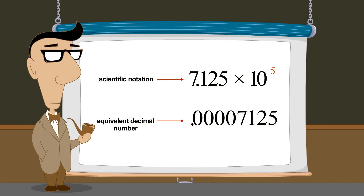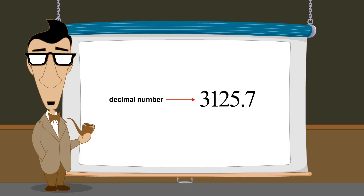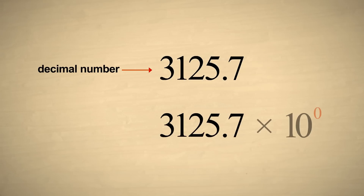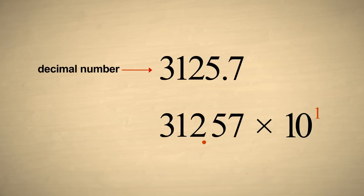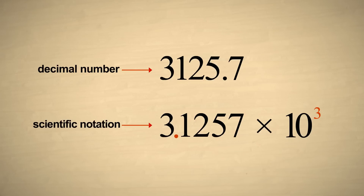Now that we have seen how to convert a number written in scientific notation to a standard decimal number, let's convert a decimal number into scientific notation. We'll start by adding a multiplier of ten to the zero power. This is the same as multiplying by one, so the value of the number is unchanged. For a number to be written in scientific notation, the decimal point must be positioned immediately after the first non-zero digit of the number. In this example, we will need to move the decimal point three columns to the left. For each column we move the decimal point, we must increase the exponent of the multiplier to compensate for the fact that we have decreased the value of the number by one-tenth. The number's value is unchanged, and it is now written in scientific notation.